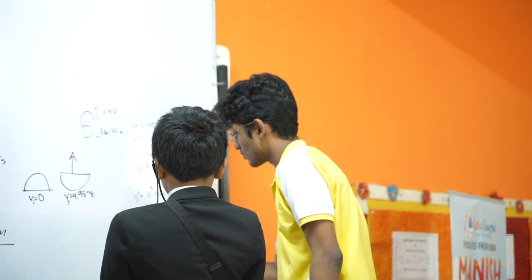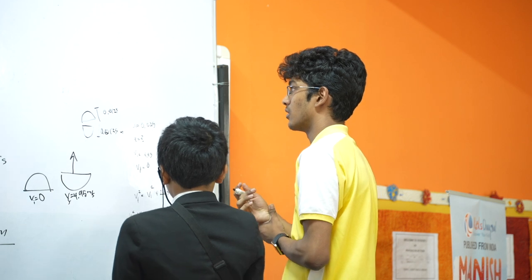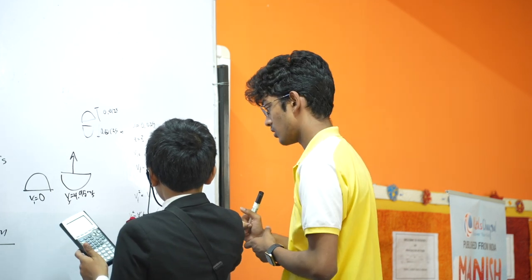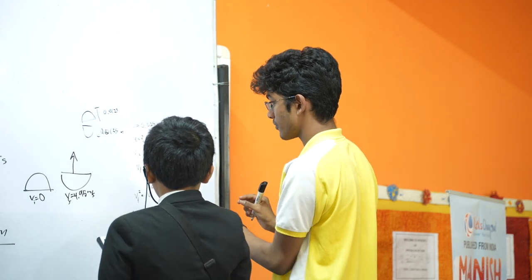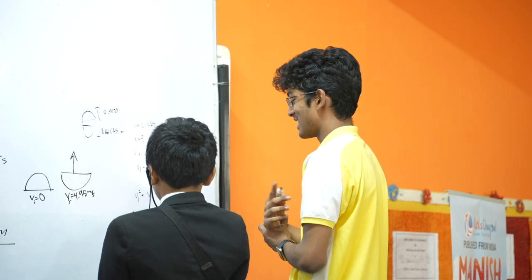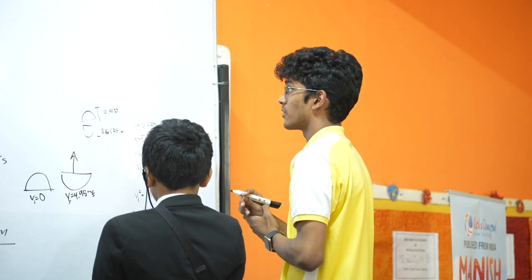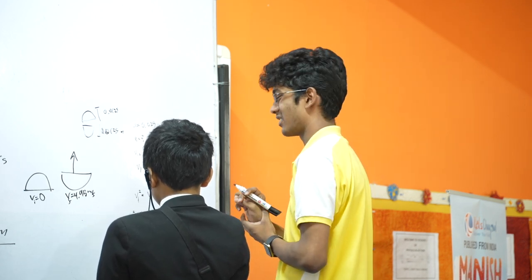4.95 squared divided by... 1 by 2S. Oh, 0.05? Yeah, 2S. Oh, 2S. Oh, I'm sorry, I thought that said 2G. 4.95 squared. 24.5025.